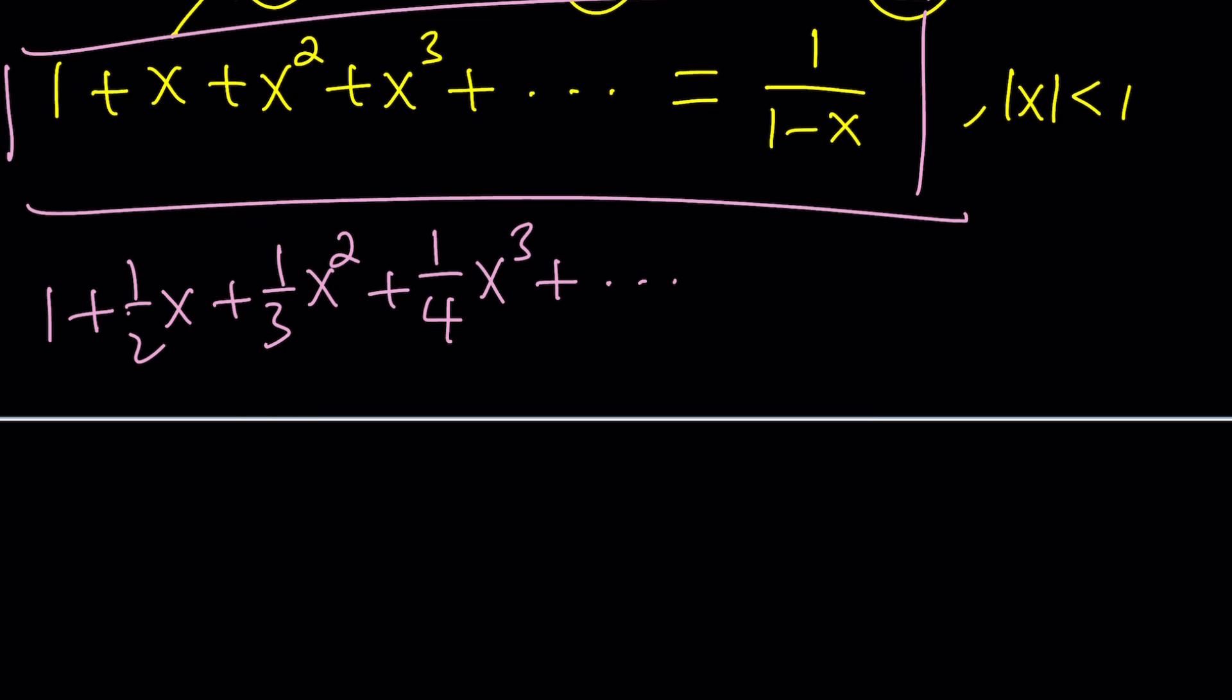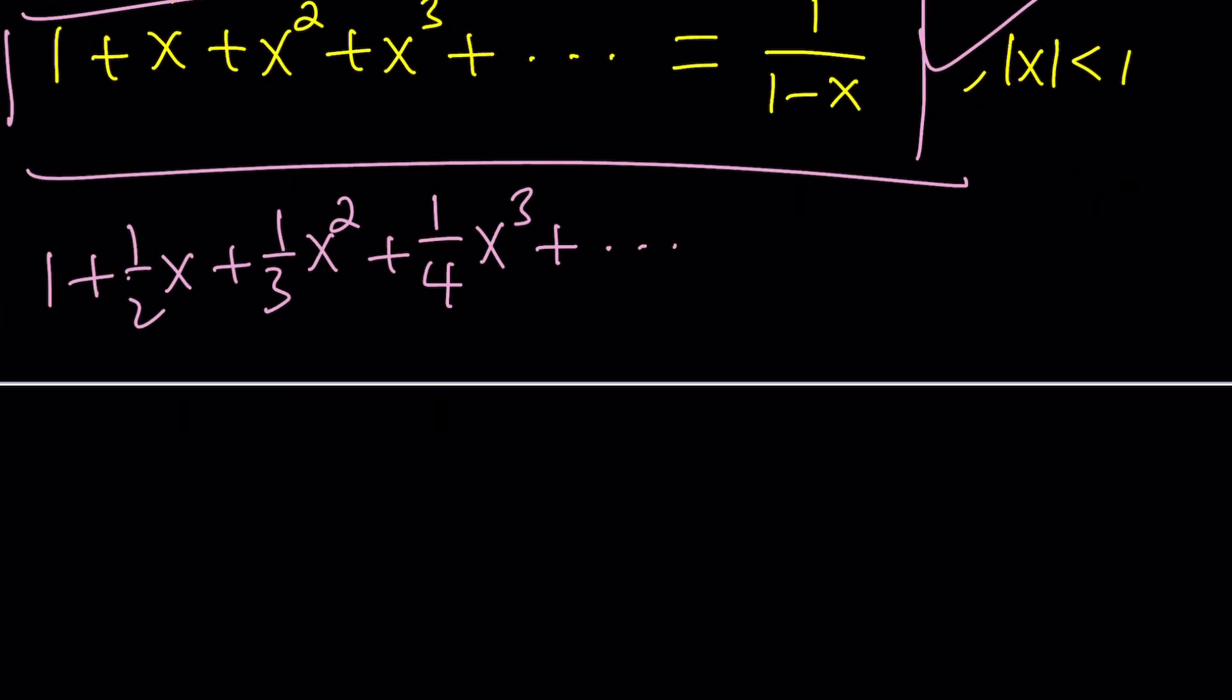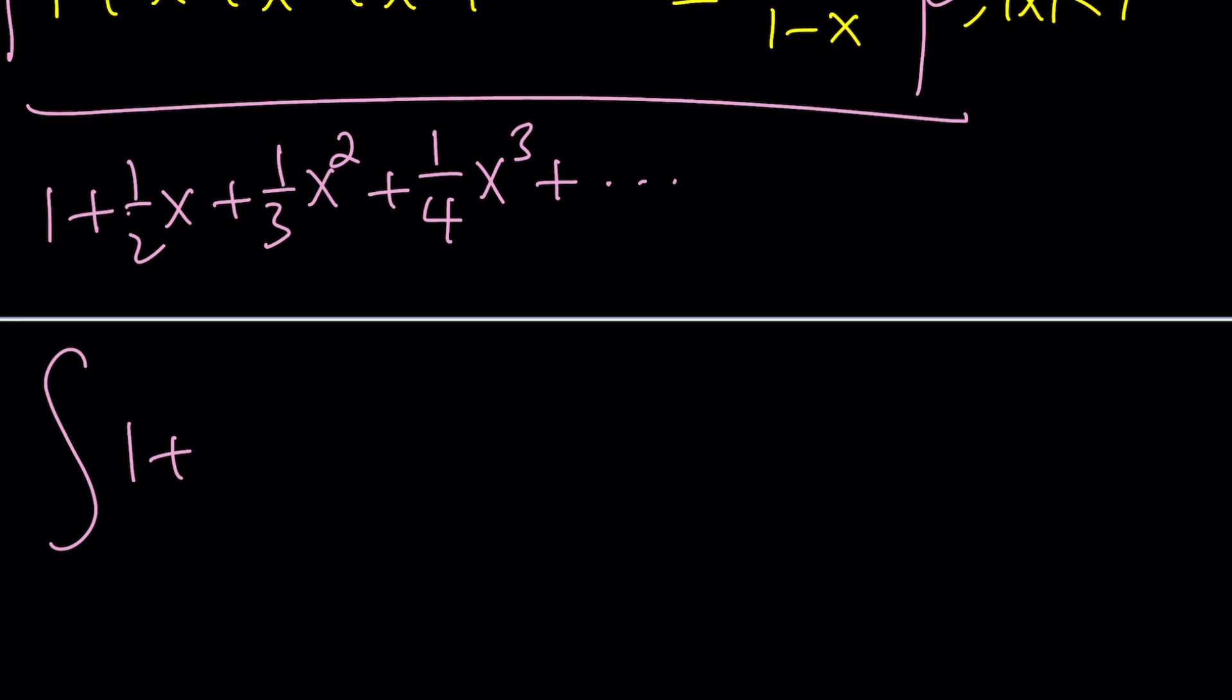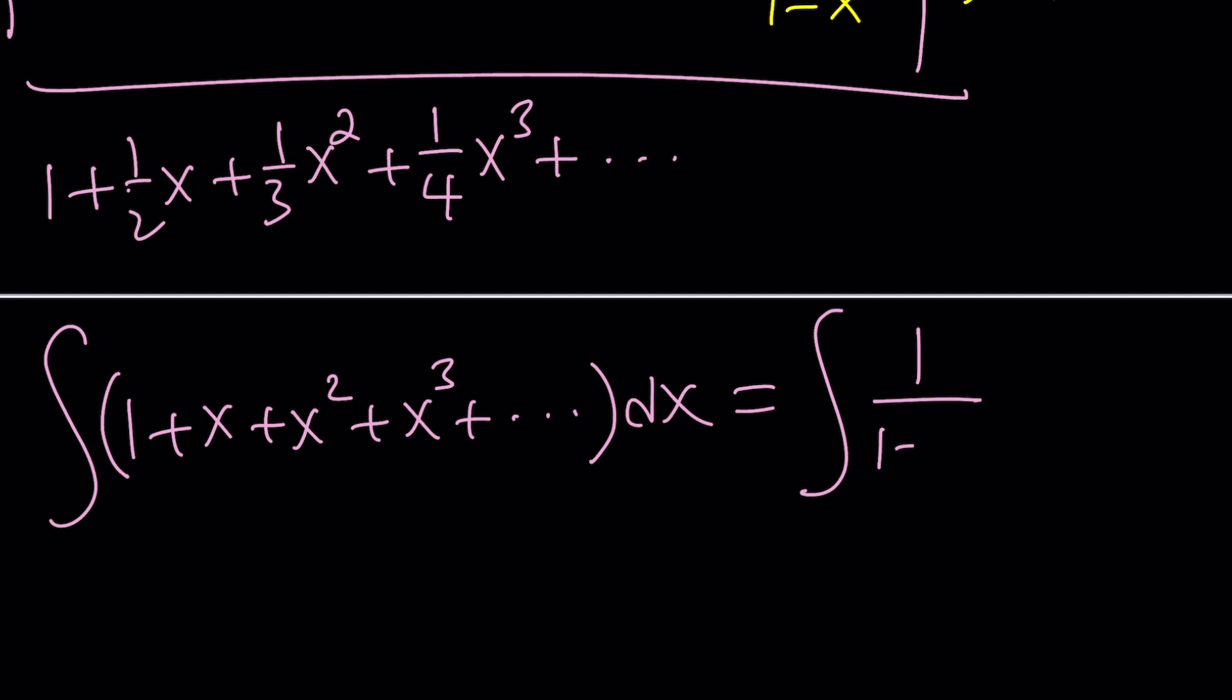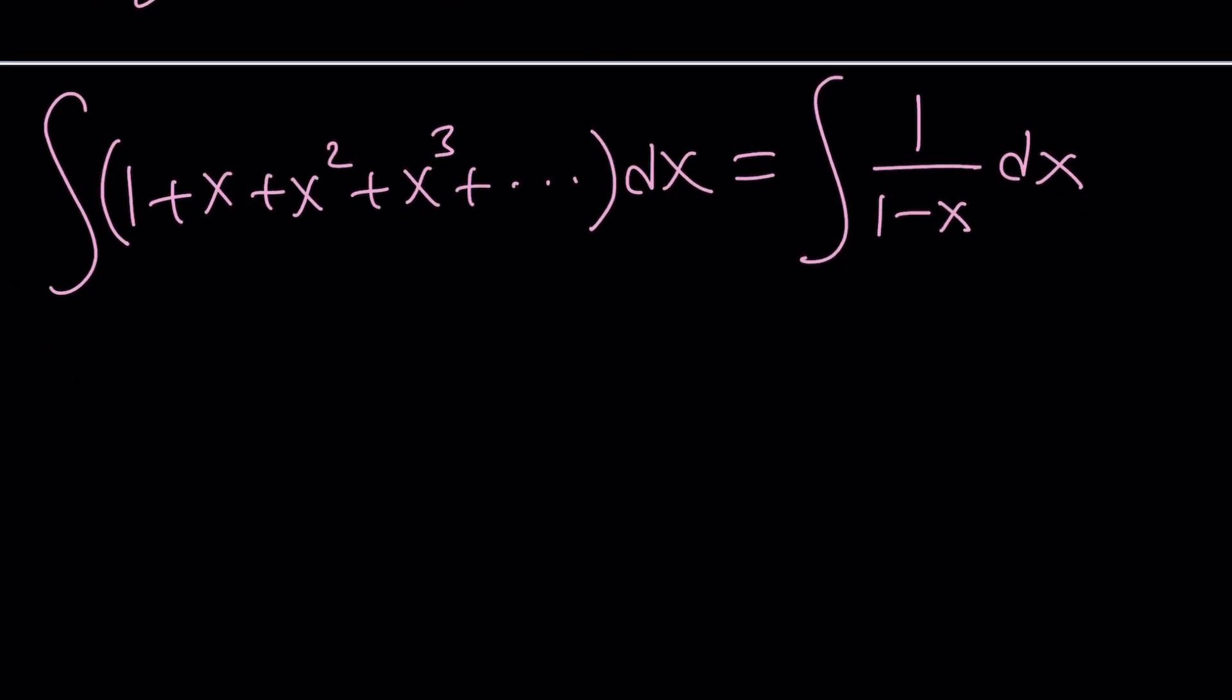I'm going to integrate this expression: integrate 1 + x + x² + x³ dx. And of course, that sum has an answer, so we can integrate both sides. When you integrate 1, you get x, then x²/2, x³/3, x⁴/4 and so on.